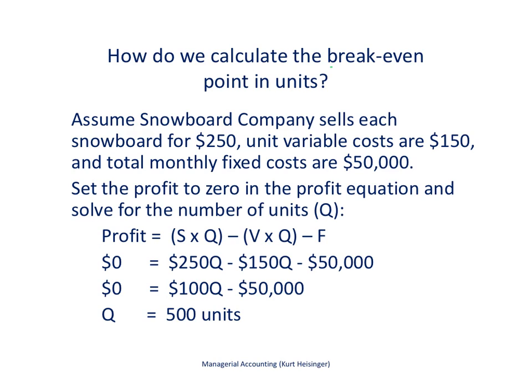Let us start by finding the breakeven point in units using Snowboard Company. Assume they sell each snowboard for $250, the unit variable cost per snowboard is $150, and total monthly fixed costs are $50,000. We take the profit equation, set profit to zero, and plug in this information to figure out the breakeven point in units by solving for the quantity Q.